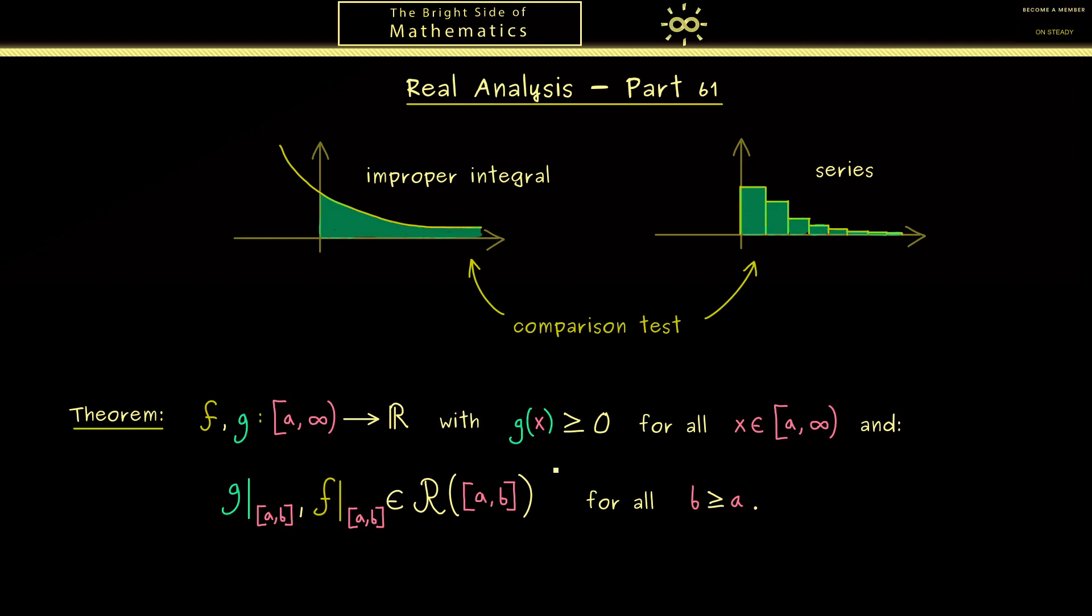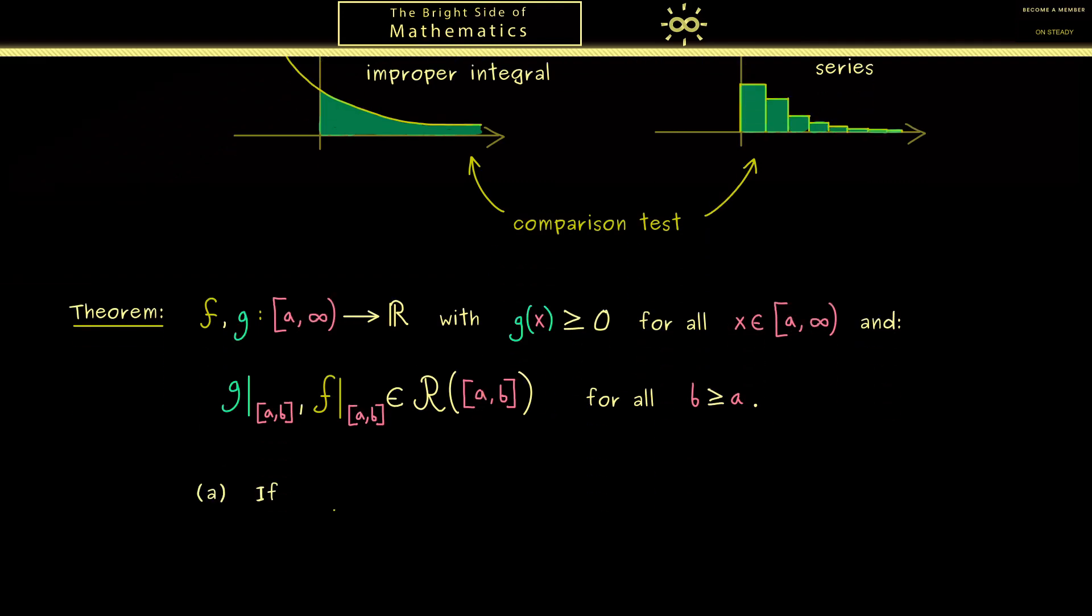So you see this is the same assumption as we had it in the last video. Okay, then let us formulate the comparison test. In the first part, we consider that g is a majorant for f. In other words, g(x) should always be greater or equal than f(x). However, since f could have negative values, we have to consider the absolute value of f. And now of course, this should hold for all points in the domain.